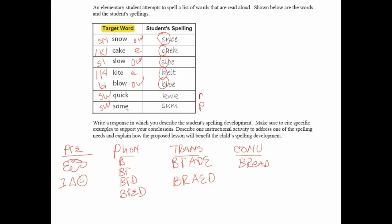The errors in blow, kite, slow, cake, and snow are clearly transitional. The child, for example, is overgeneralizing OE to a number of these words — to blow, to slow, and to snow. Here the child is just not performing very well with silent E. It is an attempt at the silent E pattern, so we wouldn't call that phonetic, because the child isn't trying to write K-I-T for kite. Nor in cake is it K-E-K. It is an attempt at a pattern, but a failed attempt. We have some phonetic and we have some transitional.